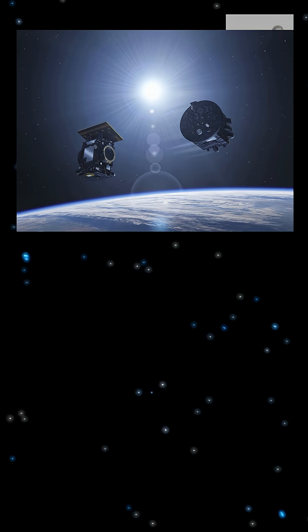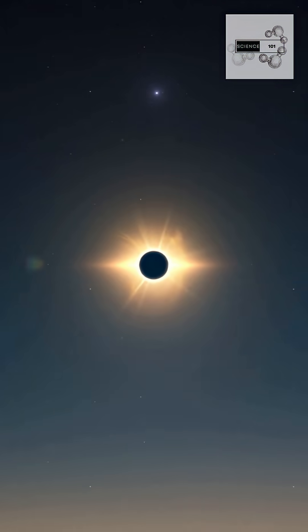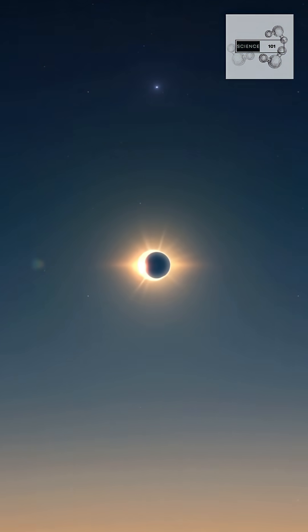This is Proba-3, a European Space Agency mission that choreographs two satellites in perfect formation, flying just 150 meters apart in the emptiness of space.